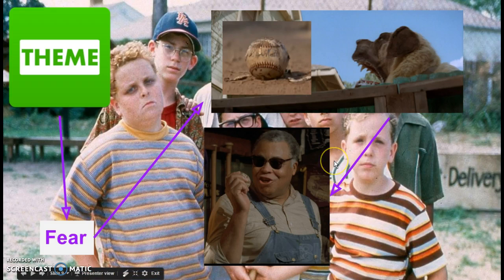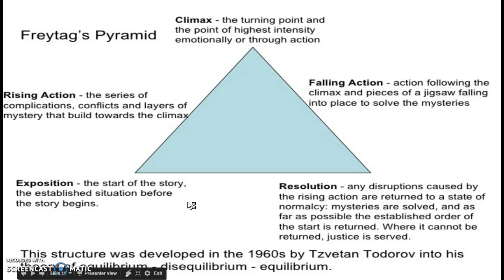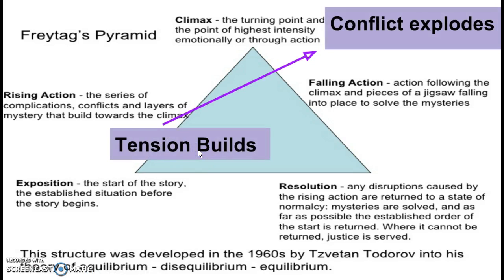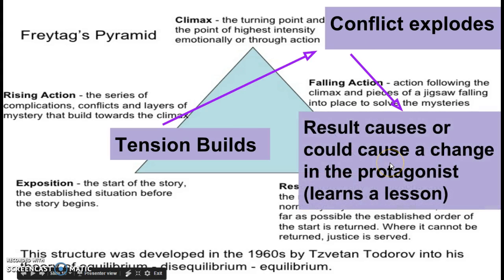You could take it a couple of different ways — one being: don't be fearful of somebody until you get to know him or her. Basically, things can get worse if you don't confront your fears. So remember: tension builds, you get to the conflict, it explodes. In the case of the Sandlot, the ball going in the yard causes the climax, the change happens, and these kids learned a lesson. Today's focus — plot and theme: when conflict explodes, look for that climax. That's going to help you figure out what the theme is.